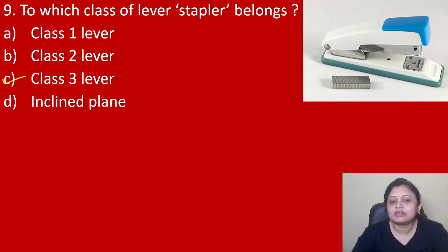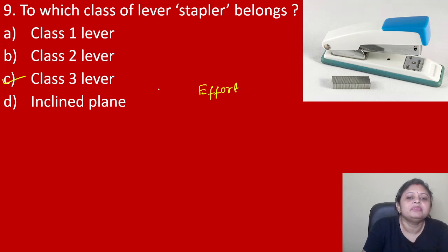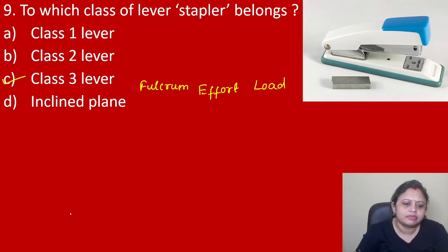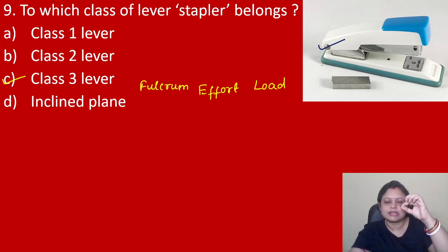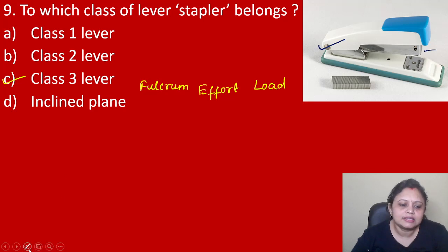In the case of a class 3 lever, the effort is present in the middle, the fulcrum is at one end, and the load is at the other end. We have discussed this in our previous session. Here the fulcrum is connected at one end, the effort is in the middle, and load is there — so it is an example of a class 3 lever.